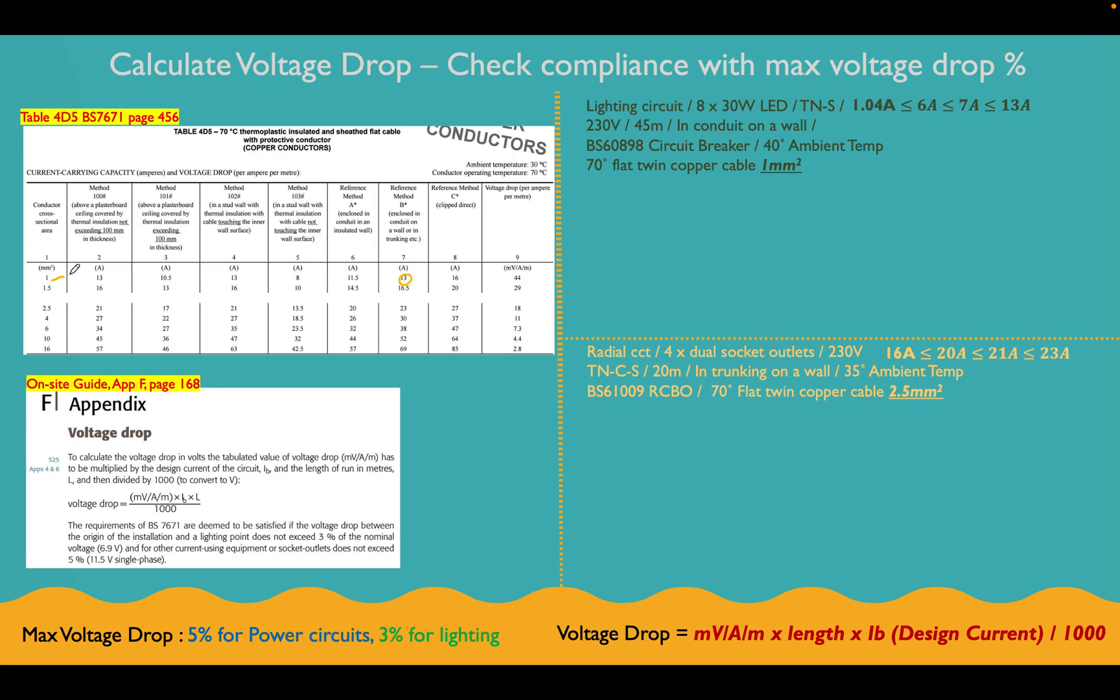So when we're on this table, we can stay here and we can get our millivolt amp per meter value, which is what we need for our voltage drop calculation. So when we've selected 1mm, we can come across and we can get in this side of the table down here, we can actually select our millivolt amp per meter rating, which in this case is 44. So for our lighting circuit, it's 44 millivolt amps per meter. Let's leave it there, and we're just going to come back to that in a minute.